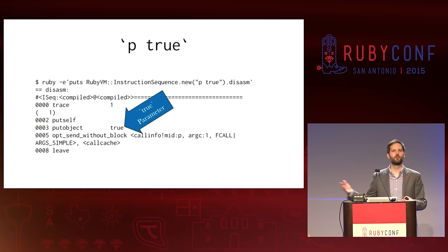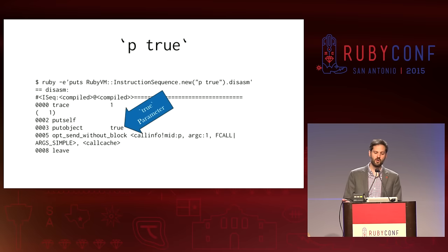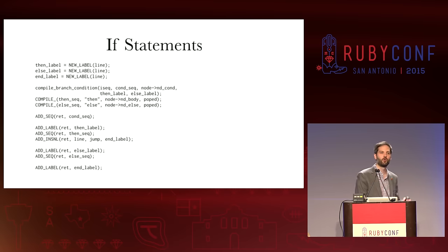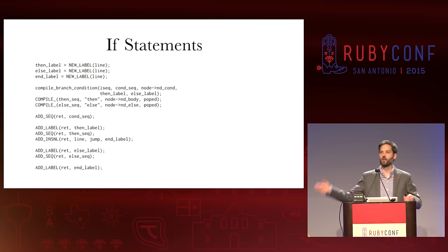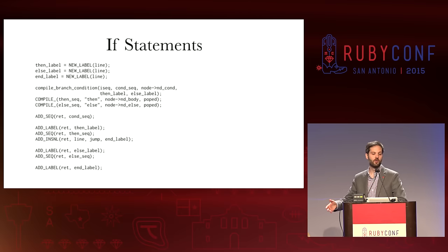If we print out the code — let's say we print out p true and look at the instructions that come out — we can see we actually got put_object. That was our name, and you can see the parameter to that instruction is true, just like we saw in the code. I want to look at a little bit more complicated example, which is if statements. You'll notice it handles each branch of the if — conditionals, the body, and then the else clause.